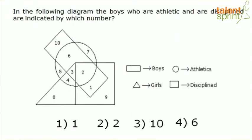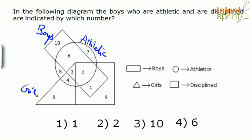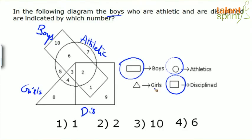Last question: in the following diagram, rectangle represents boys, circle represents athletics, triangle represents girls, and square represents discipline. Find the boys who are athletic and are disciplined — indicated by which number? Boys is rectangle — what is inside rectangle: 10, 6, 3, 2, 1. It should also be inside circle because boys must be athletic — inside circle we have 6, 3 and 2. So 10 and 1 are eliminated.